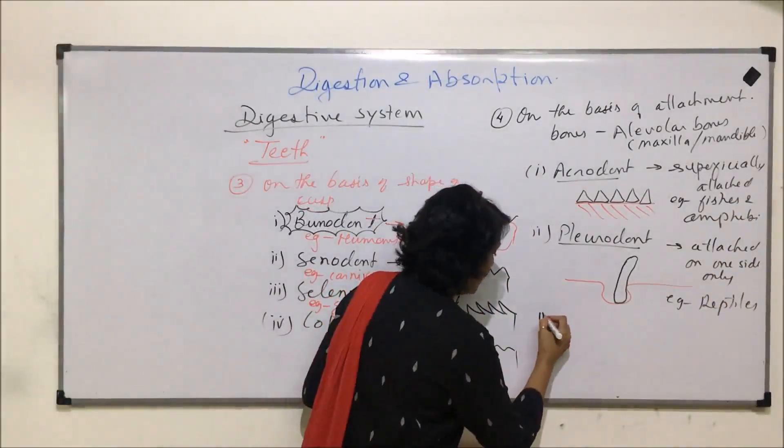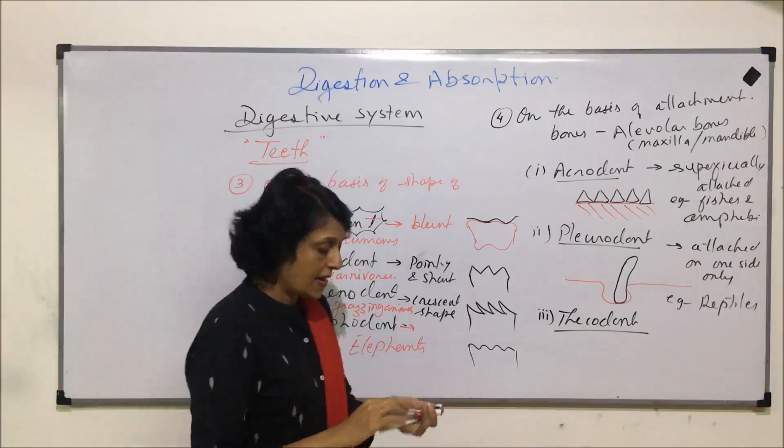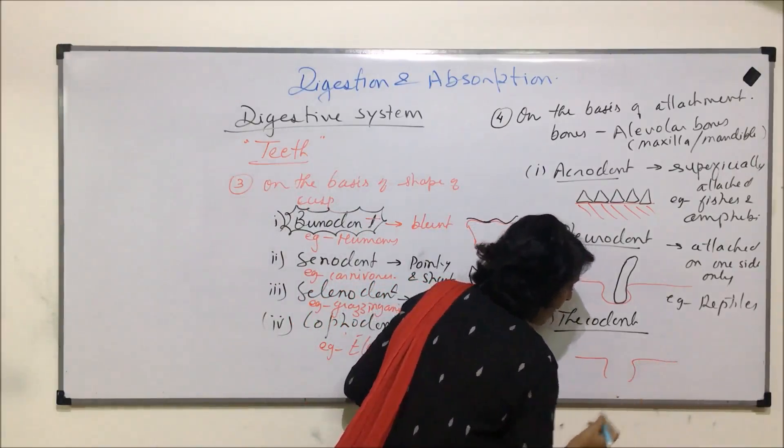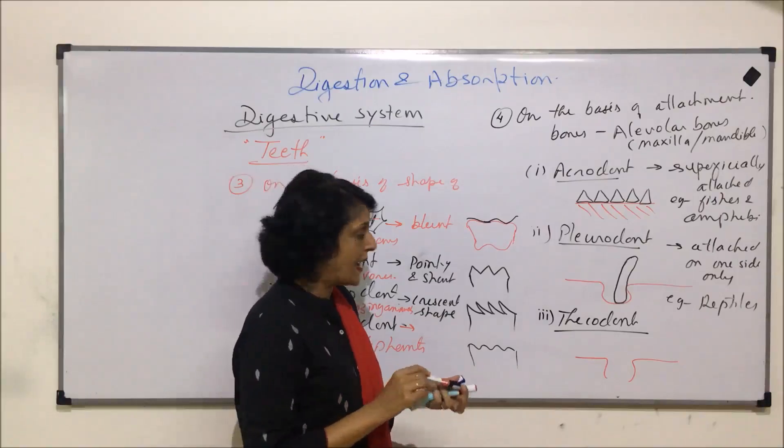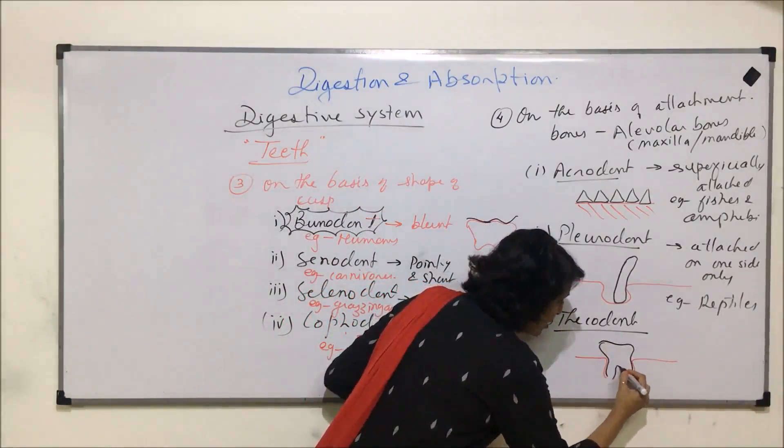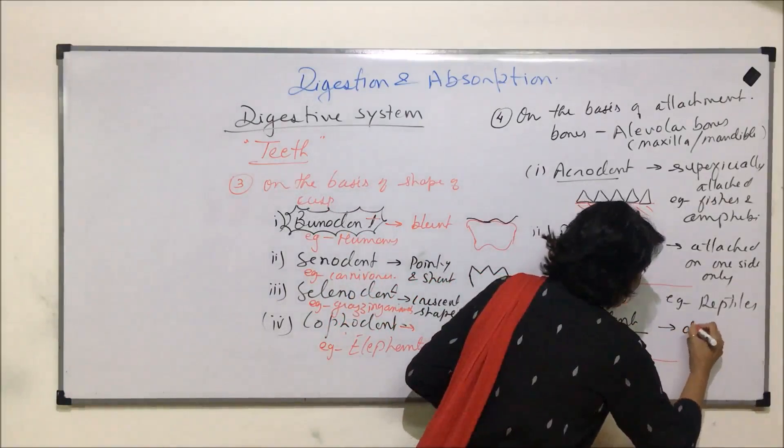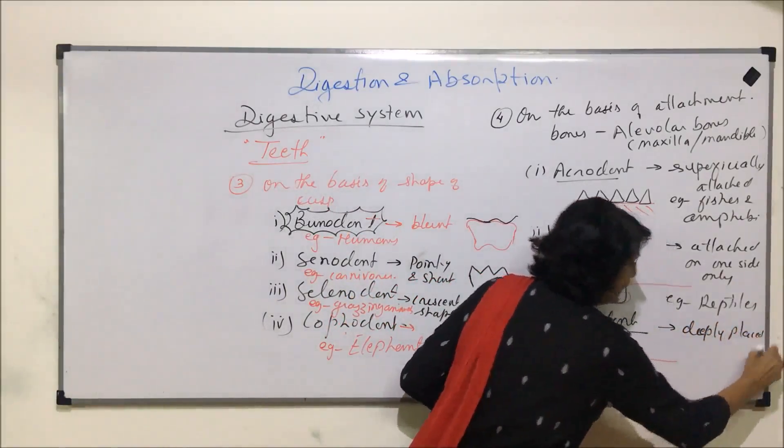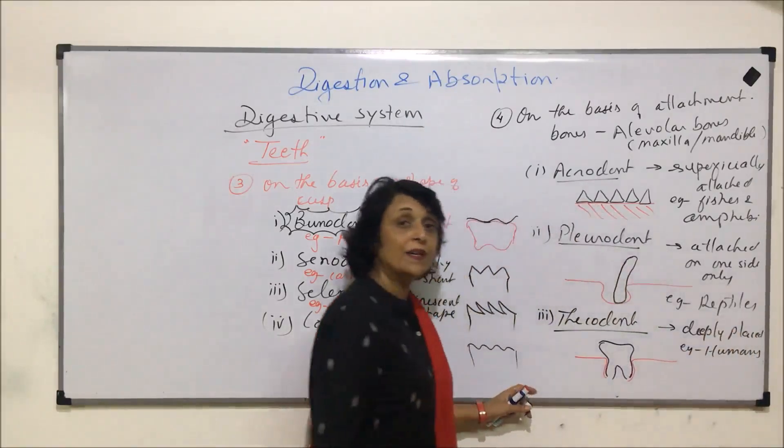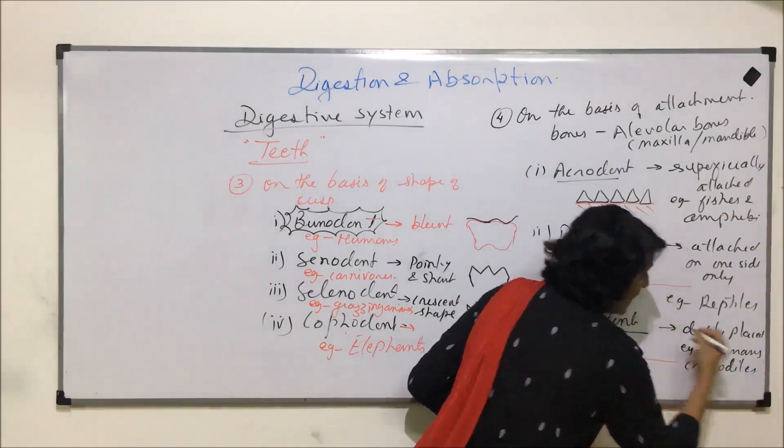The third type of attachment is known as thicodont. And in this, again, the alveolar bone, that is the bone in which the teeth are attached would have sockets. And these sockets are known as the alveoli. In thicodont dentition, the tooth is properly attached in the socket. And that is why the attachment is very strong. So this is deeply placed in the socket. And the example is humans.